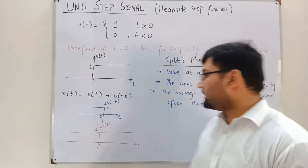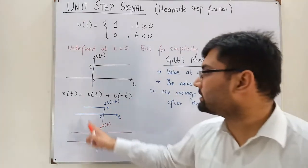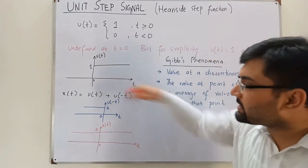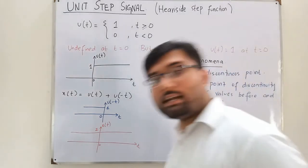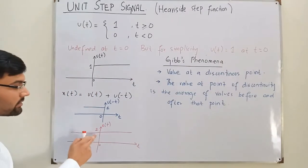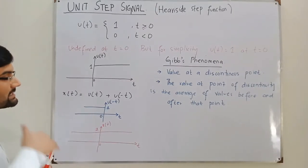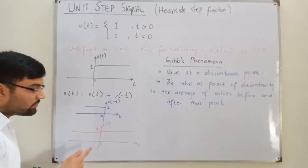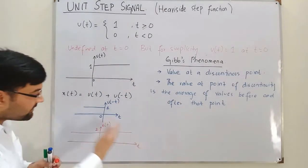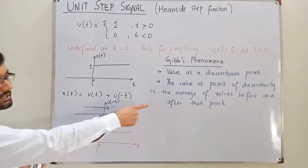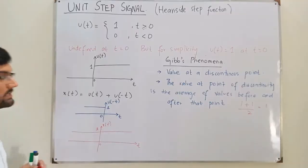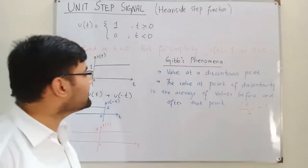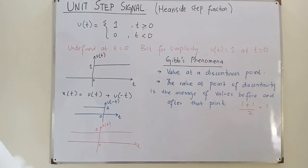A question arises: at t equals 0, both u(t) and u(-t) are 1, so shouldn't x(0) = 2? However, t = 0 is a point of discontinuity, so we apply Gibbs phenomena. The value just after t = 0 is 1, and the value just before is also 1. The average is (1+1)/2 = 1, so x(0) = 1.